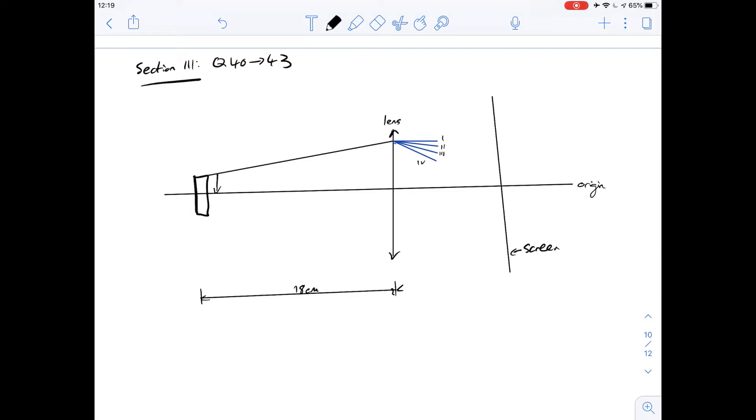Hi I'm Carl and in this video we're going to have a look at questions 40 to 43 in section 3 of the purple booklet. This is a question about lenses and we're given some information that's included in this diagram. The other thing we're told is that the converging lens has a focal length of 6cm and we're given the lens equation as well.